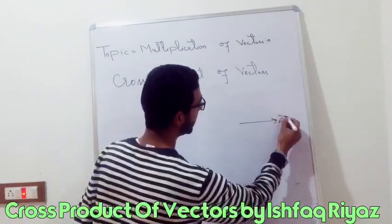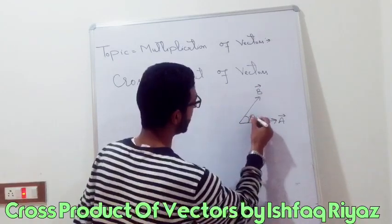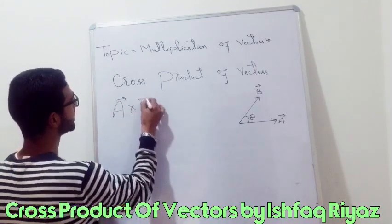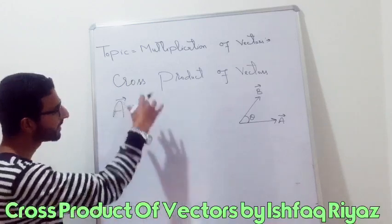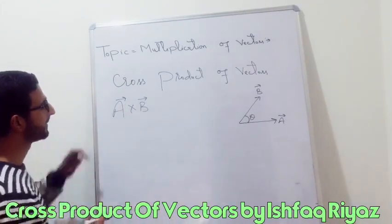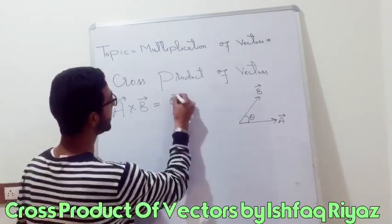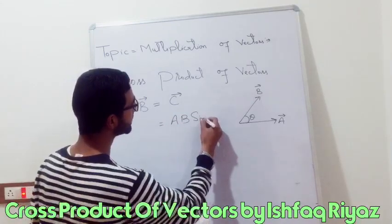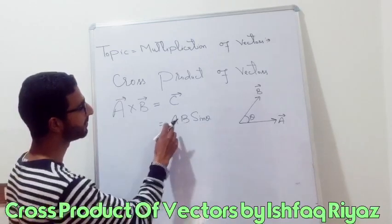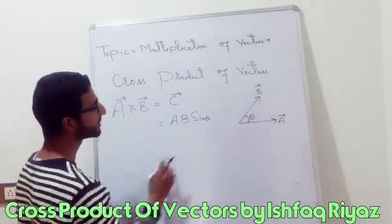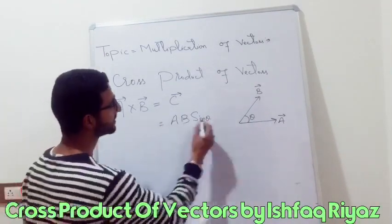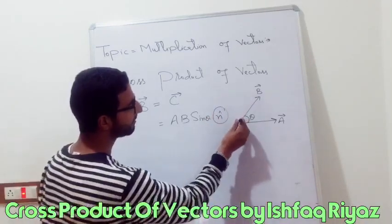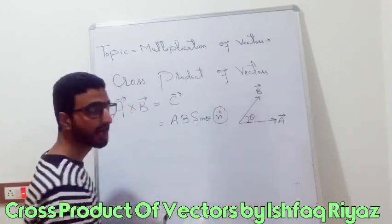If I have two vectors a and b inclined at an angle theta, how do we define the cross product — that is a cross b? The cross product is also called the vector product of vectors, because we always get a vector quantity as a result. So a cross b is basically a third vector c whose magnitude is equal to the magnitude of a, magnitude of b, and sine of the smaller angle between the two vectors. This cross product should also have some direction, given by n̂, the unit vector perpendicular to the plane containing a and b.